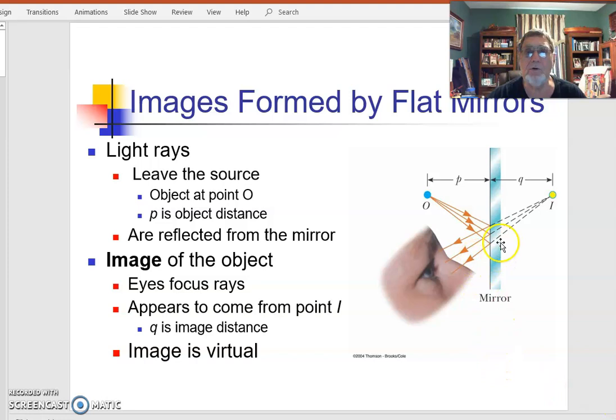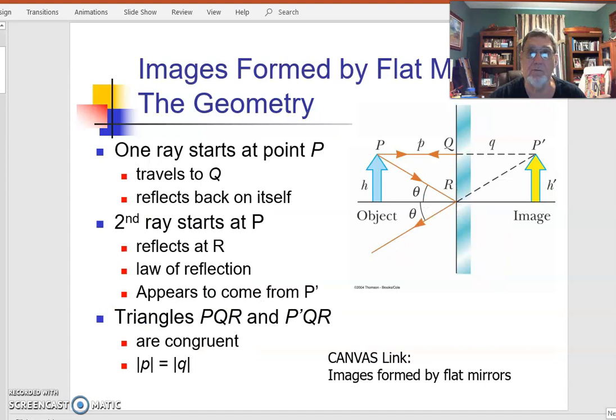So here's our mirror. Here's an object that's emitting light. And the way we see it is that light's reflected to our eye. But it looks to our eye like it's coming from back here, not over here. And therefore, the image appears to be a certain distance from us. And the object to mirror is the object distance P. And image to mirror is our image distance. This is a virtual image that we're showing here.